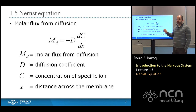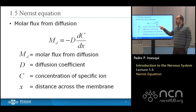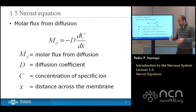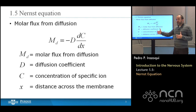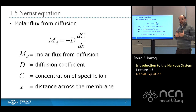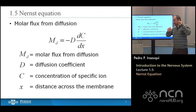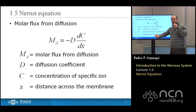D, the diffusion coefficient, multiplied times the derivative of the concentration with respect to X. The concentration is a function of X, and X is the distance across the neuronal membrane. So if you have a higher concentration inside the cell than outside the cell, then you would expect the derivative of the concentration to be a negative slope. As you're moving from inside to outside, the concentration goes from a high value to a low value. And so the slope, which is the derivative, is going to be a negative number.